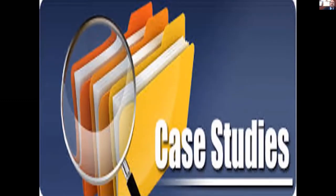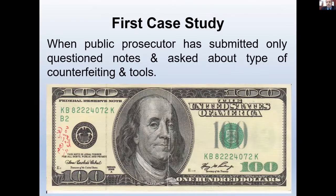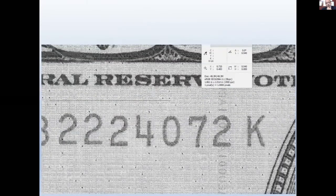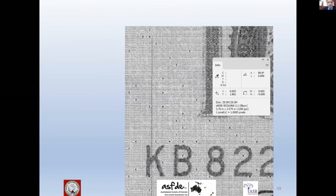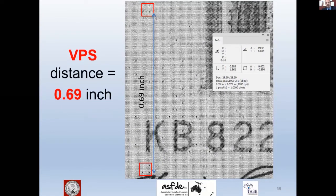Moving to case studies. In the first case study, public prosecutors submitted questioned notes and asked about the type of counterfeiting and tools used. We applied our strategy of viewing, extraction, measurement, and classification. We found three-dot or reverse-L repeated units. The horizontal pattern separation distance equals 0.54 inches, and the vertical pattern separation distance equals 0.69 inches.